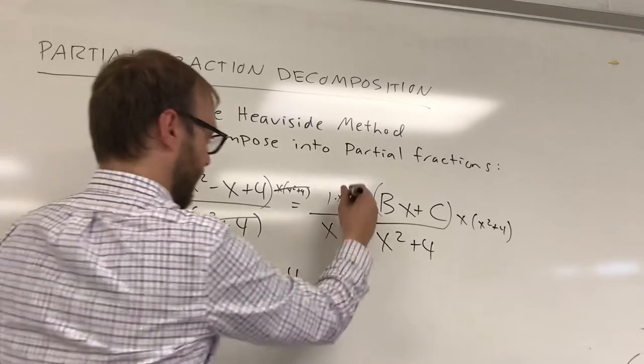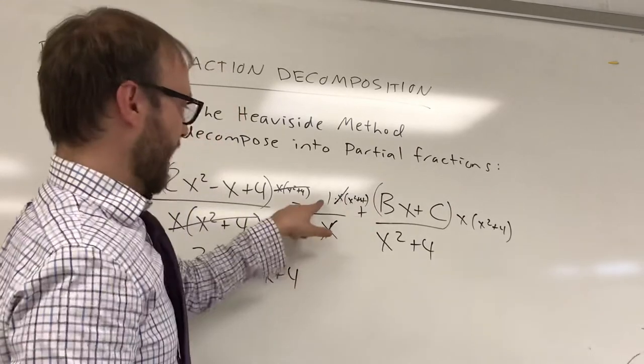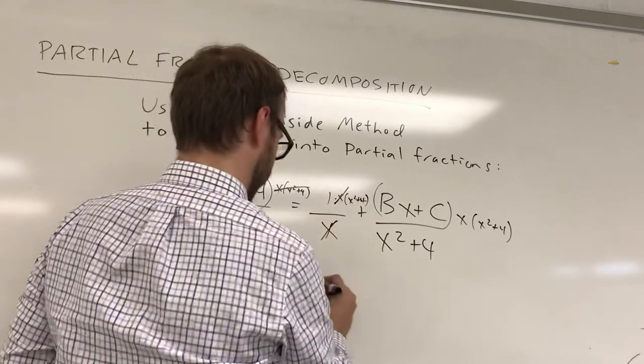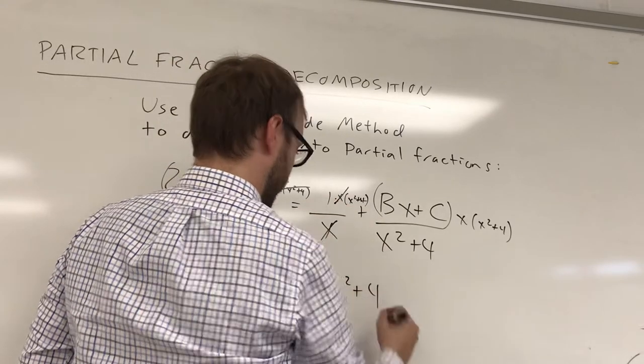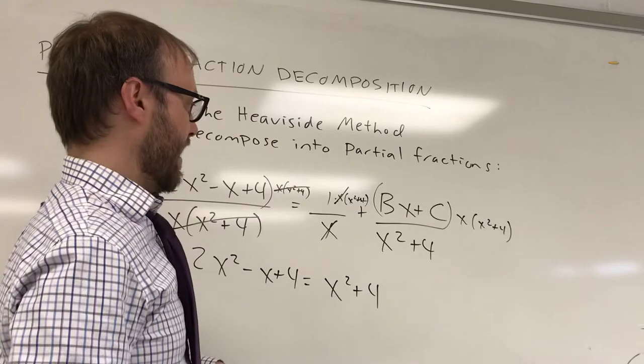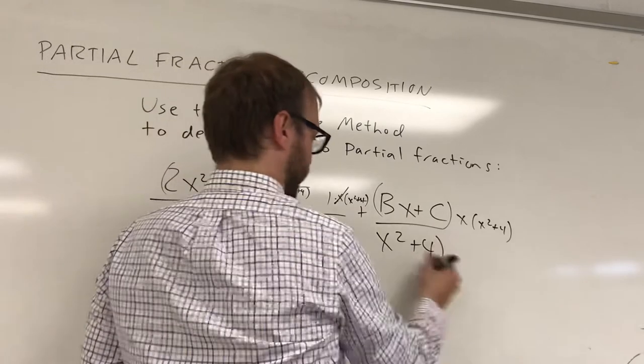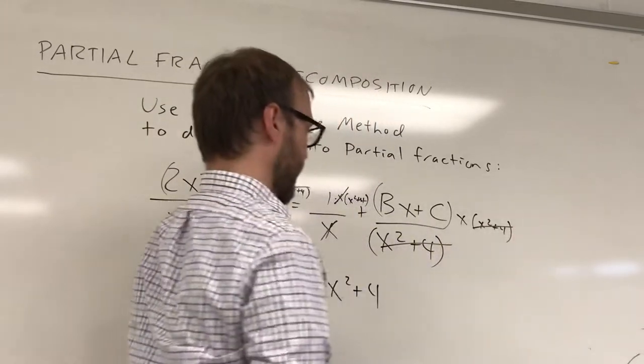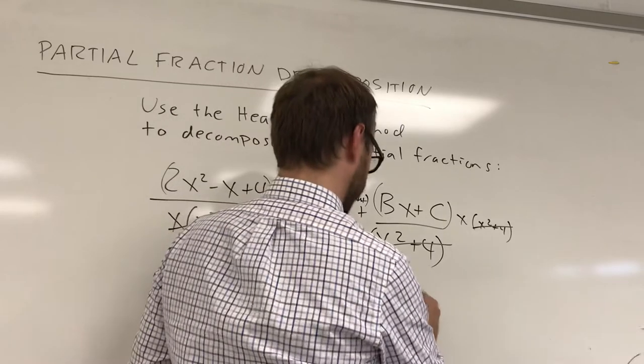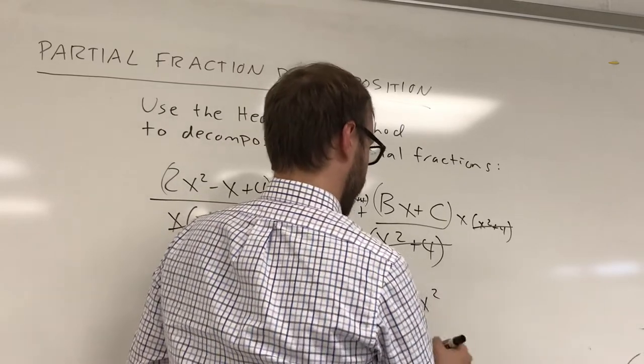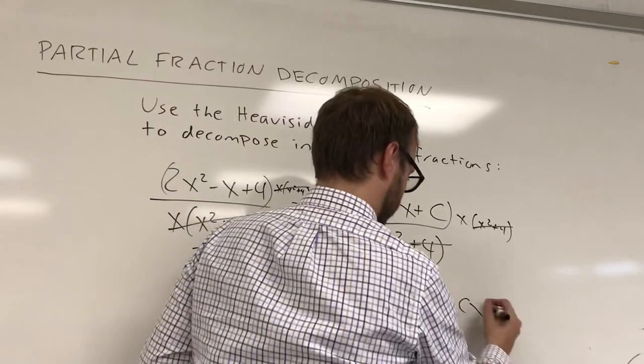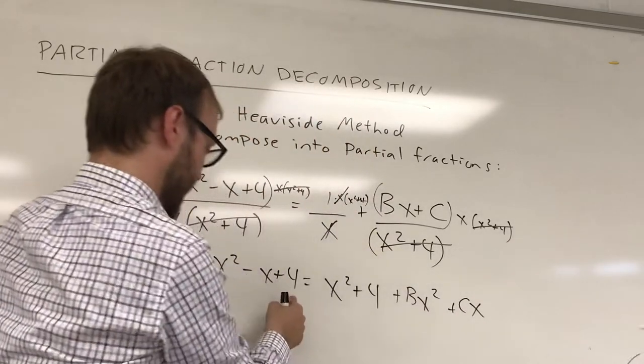This stuff cancels here and I already know what A is so I just get an x squared plus 4 here. And then the x squared plus 4 term is going to cancel here and here. I'm going to get a bx squared plus cx. This needs to equal this.